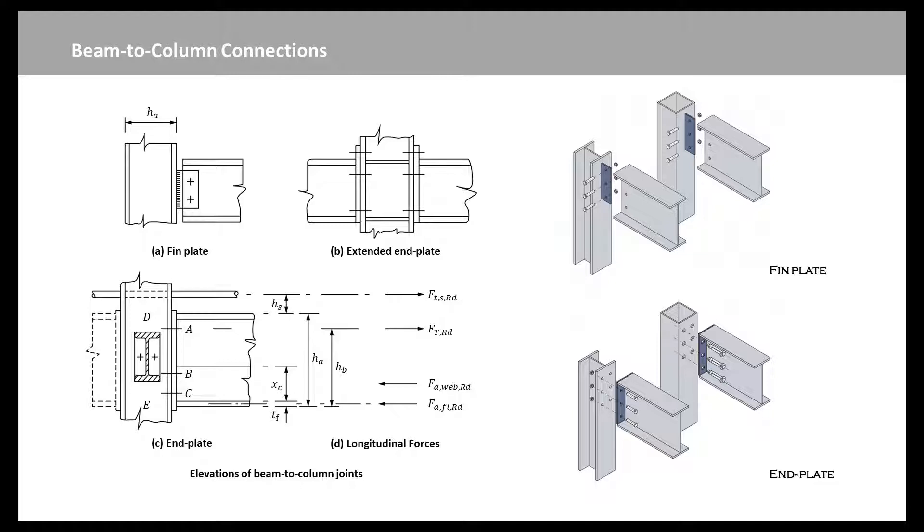The tensile resistance of the top bolts, FTRD, is given by the weakest of these types of deformation. The longitudinal reinforcement in the slab is assumed to be at yield in tension, so the force FTSRD is known. Assuming that any axial force in the beam is negligible, the compressive force at the bottom of the joint cannot exceed FTRD plus FTSRD.